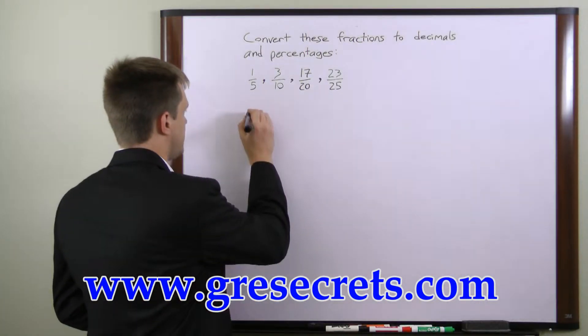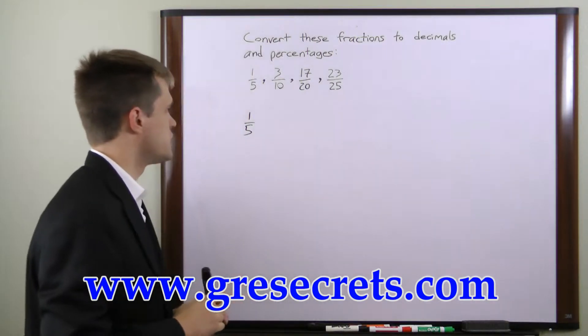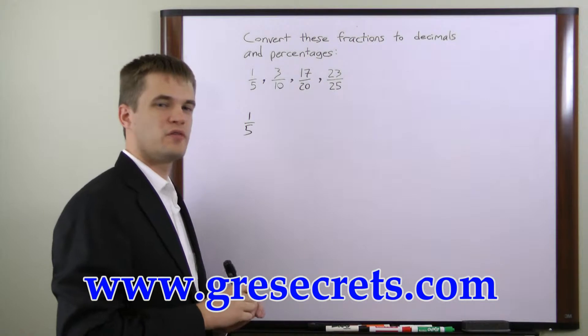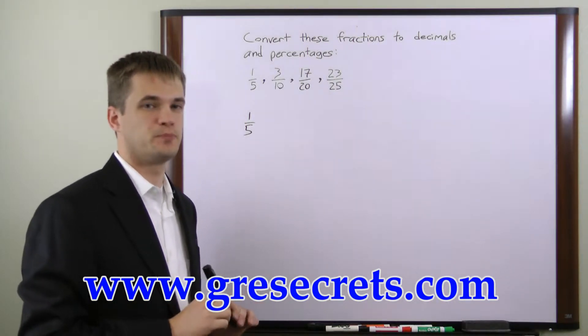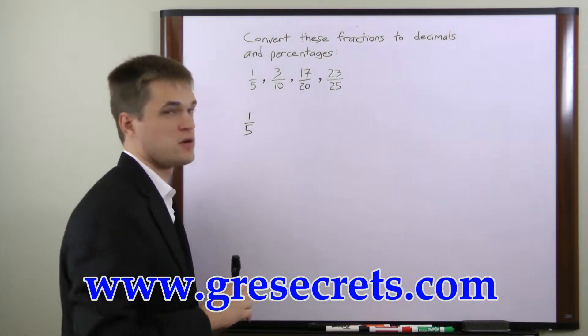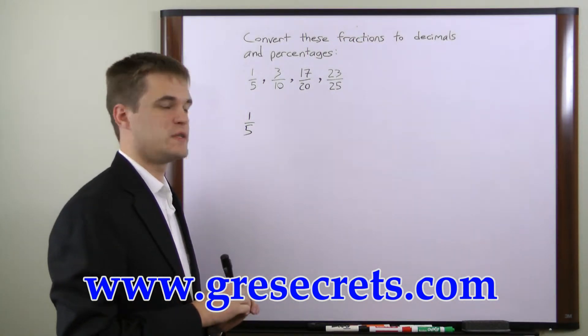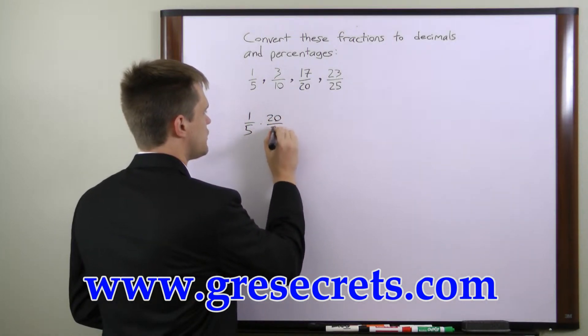Let's take 1 fifth. To convert the denominator to 100 without changing the value of the fraction, we have to multiply both the numerator and the denominator by the same number. The number that allows us to create a denominator of 100 in this case is 20. So we'll multiply 1 fifth by 20 over 20.